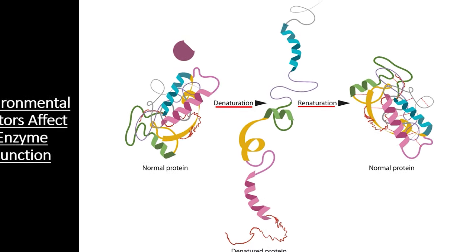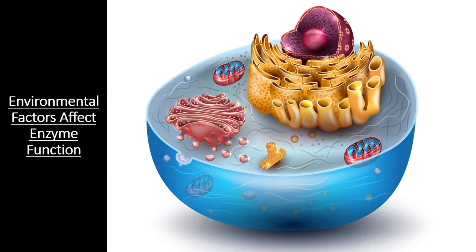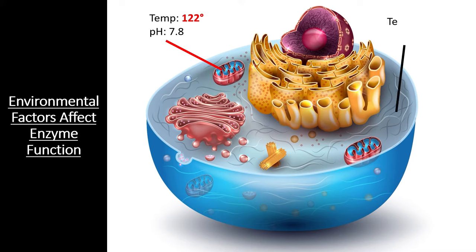Furthermore, it is also the reason that complex eukaryotic cells must maintain compartmentalization by using a series of organelles. Specific enzymes within these organelles have evolved to operate within a very narrow range of environmental values. For instance, the mitochondria can get up to a blistering 122 degrees Fahrenheit and have a pH of 7.8, while the cytosol of a human cell is much closer to 98 degrees Fahrenheit with a pH of 7.4. If all of the compartments within a cell were the same pH and temperature, many of the enzymes in a cell would denature and cease to function.